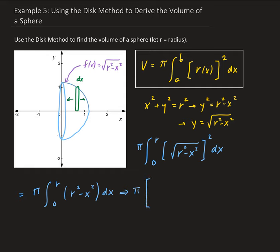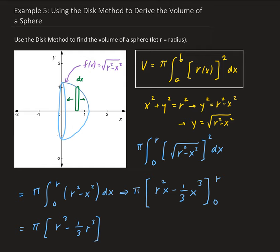Taking the integral of this, we're going to get r squared times x — because remember, r is a constant here — and then minus one-third x cubed. We want to evaluate this from zero to r. Plugging in r for x, we get r cubed minus one-third r cubed. Plugging in zero gives us zero.